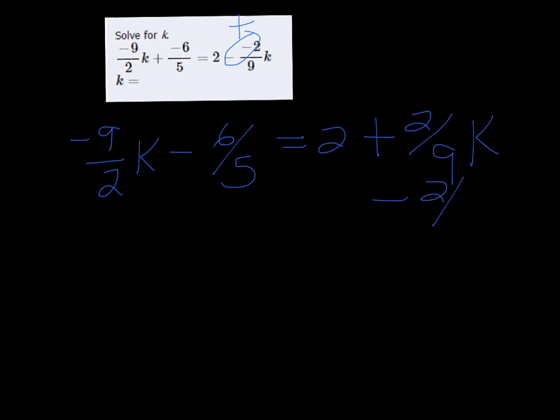I'm going to subtract 2 9th's k on both sides. I'm going to use my calculator to help me with the fractions. Negative 9 over 2 minus 2 9th's—that gives me negative 85 over 18.